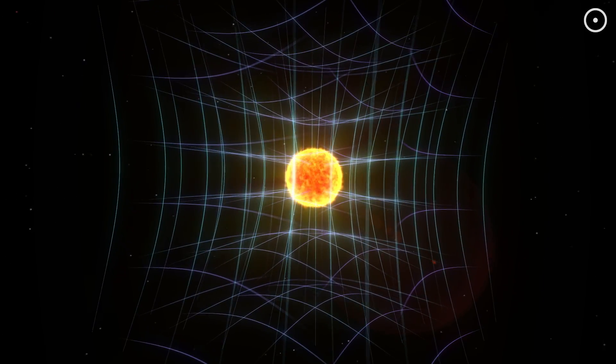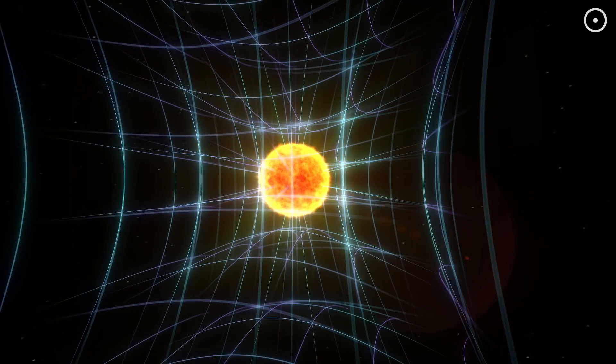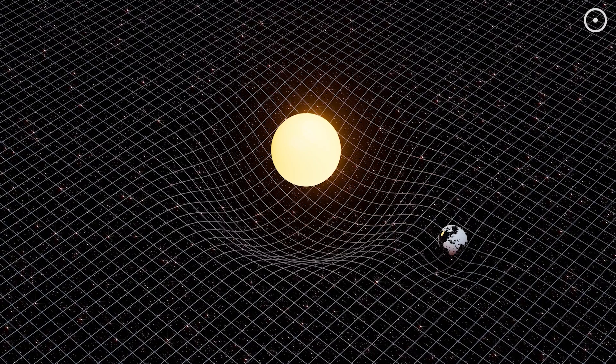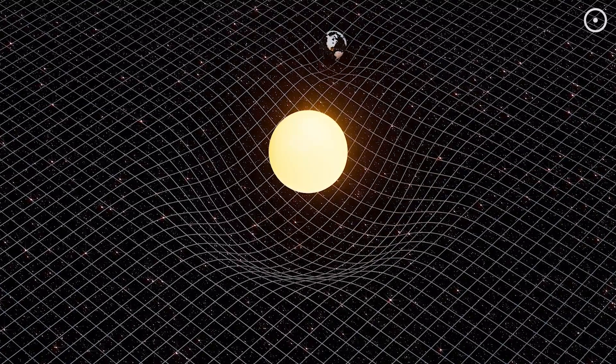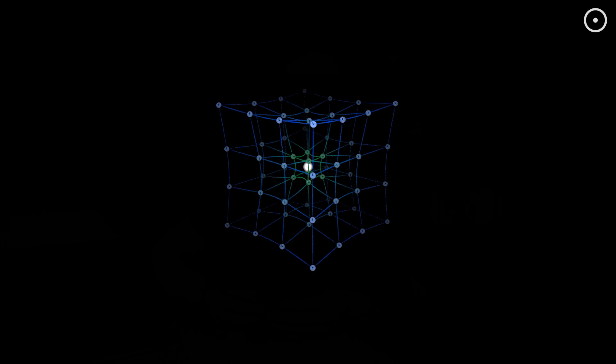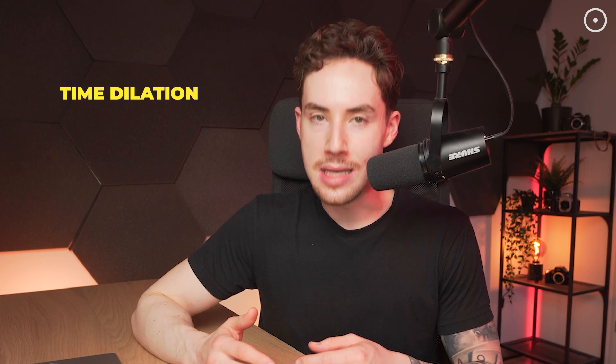And here's why a singularity is the weirdest concept out there. According to Einstein's theory of general relativity, gravity is the result of the warping of space and time caused by massive objects. Inside a black hole, all the mass is crushed into an infinitely small and infinitely dense point, where the laws of physics as we know them cease to function. The greater the gravitational field, the more space-time is curved, and consequently, the slower time flows relative to observers in weaker gravitational fields. That's time dilation.